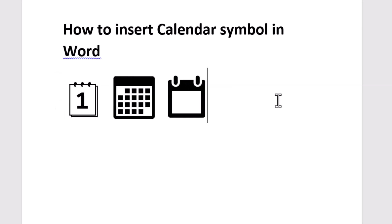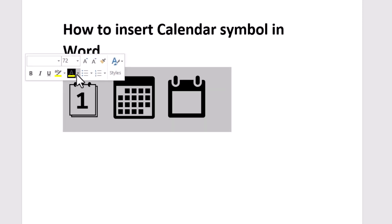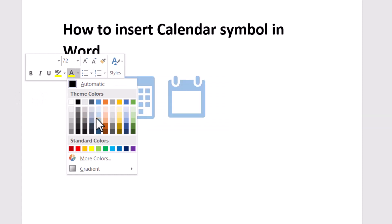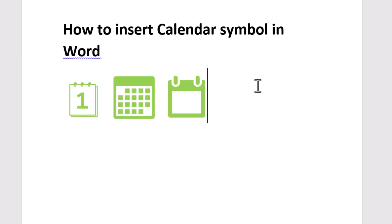So very easily you can insert a calendar symbol in Word. You can also change the color — just select it and use Font Color to select any one you like. The second way to change the color: select the symbols, click on Home, then Font Color. Click on the drop-down and select the color.